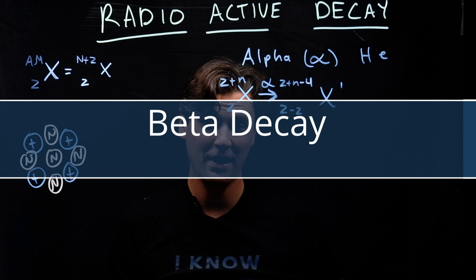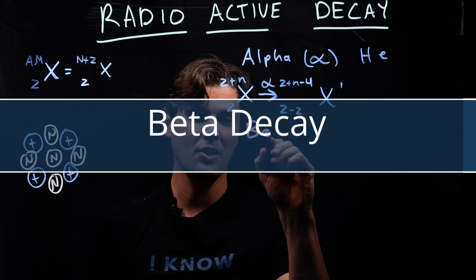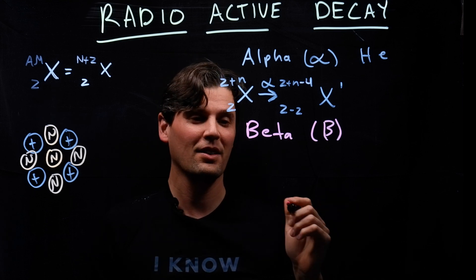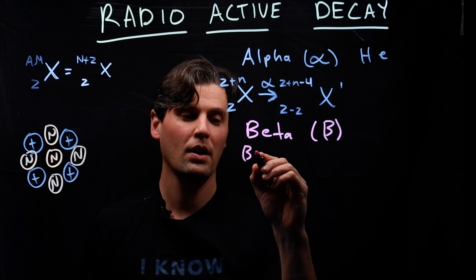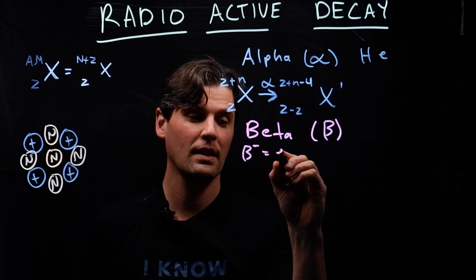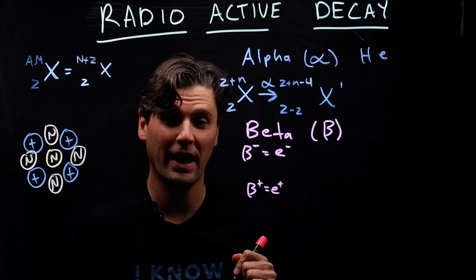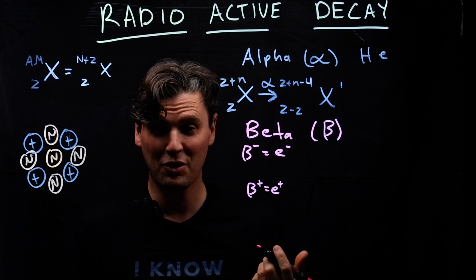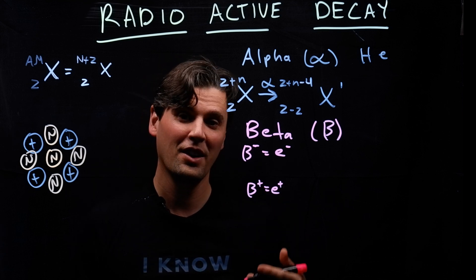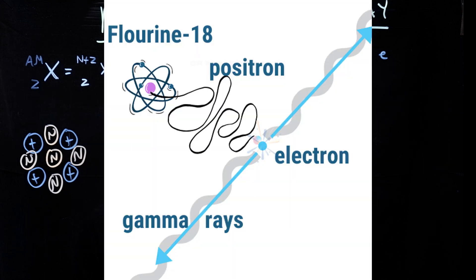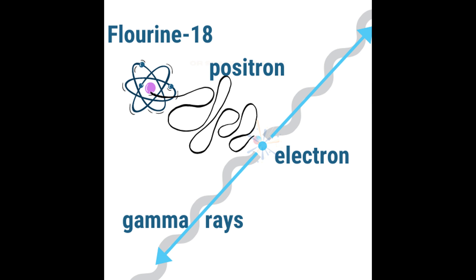The next type of decay is called beta decay. There are actually two types of beta particles — they are antiparticles of each other. You have the electron, also called beta minus, and beta plus, also called a positron. Beta plus is what we have in positron emission tomography. Those positrons actually annihilate with electrons and generate photons, and those photons are what are measured.